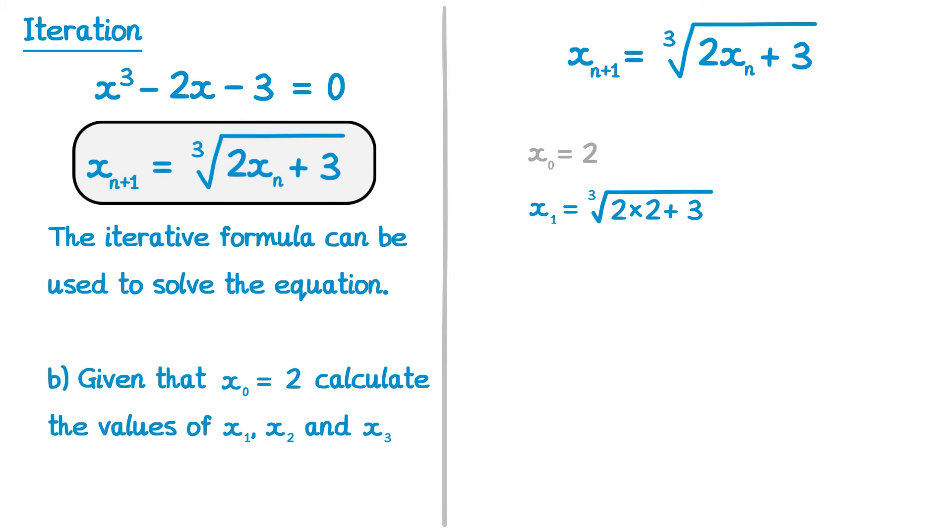You can now type this into your calculator and you'll get this number here. In an iteration question, you're probably going to need to write your whole calculator display down.